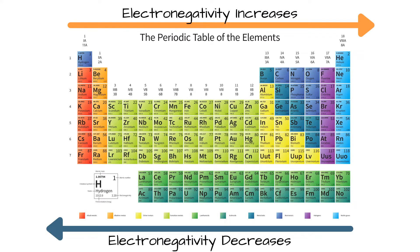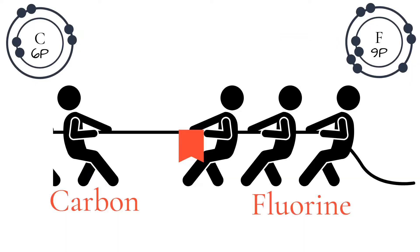Electronegativity increases as you move across the periodic table from left to right. This is because the number of protons also increases as you move across. As the atoms are all in the same row, they all have the same number of shells. With the same number of shells but more positive protons, the atom's pull on the negative electrons increases. The protons are like muscles on those people in the tug of war — the more muscles they have, the stronger they are, and the better they will be at pulling the rope towards them.